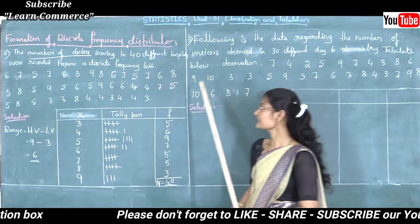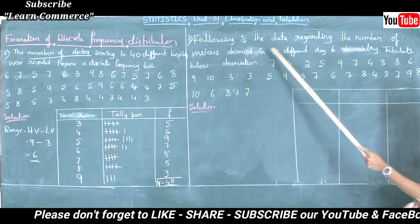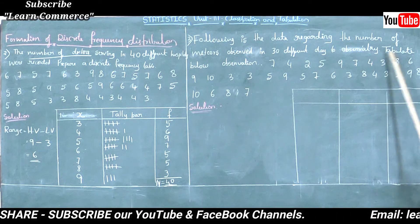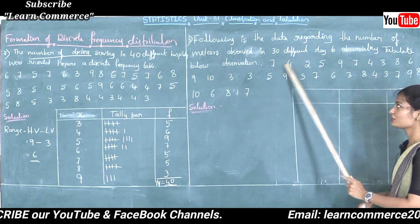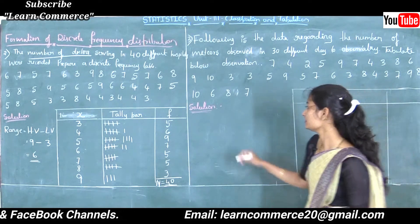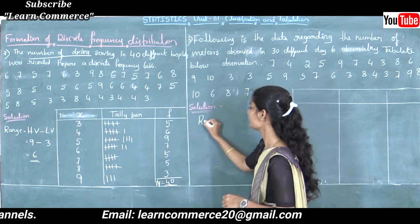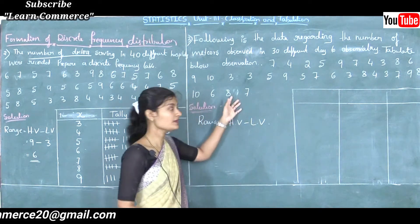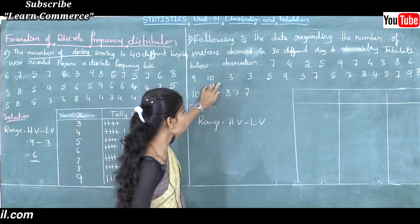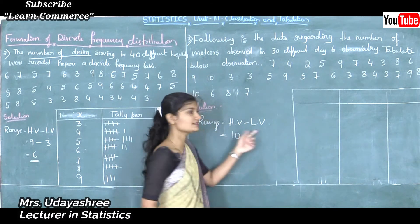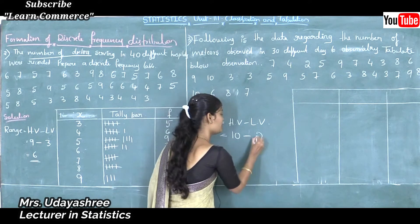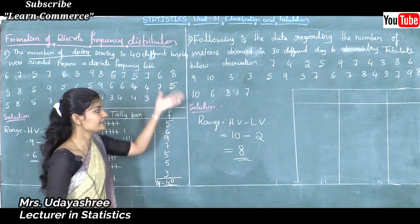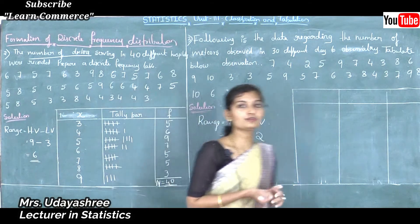Next let us move to the third problem. The number of meters observed in 30 different days at an observatory — tabulate the below observations. First we need to find the range. Range = highest value minus lowest value. In this problem the highest value is 10 and lowest value is 2. So 10 minus 2 is 8. Range is 8, which is small, so we can go with discrete frequency distribution.